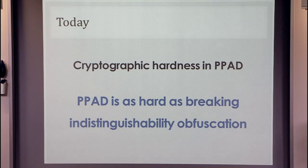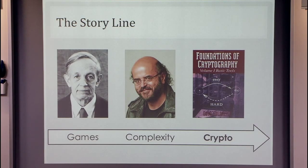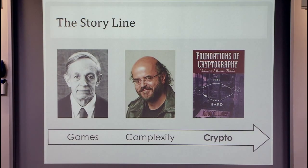We started by asking about the complexity of finding a Nash equilibrium, translated it to the End-of-the-Line problem on graphs, and now we're going to show that this problem is hard based on indistinguishability obfuscation.